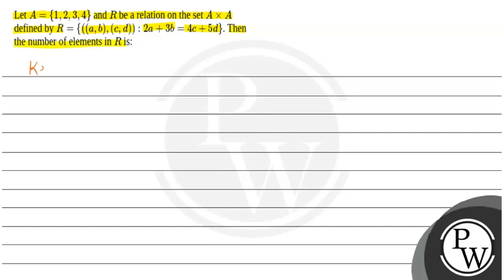For this, the key concept is that we should know how to calculate 2A, 3B, 4C, and 5D. Our given set A is {1, 2, 3, 4}. Then, if we define 2A — where A is the capital set A — how do we define this?